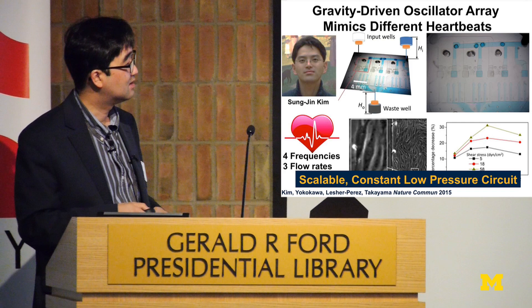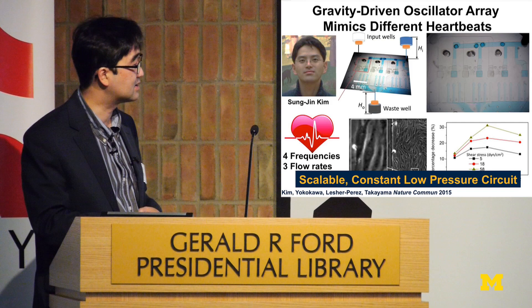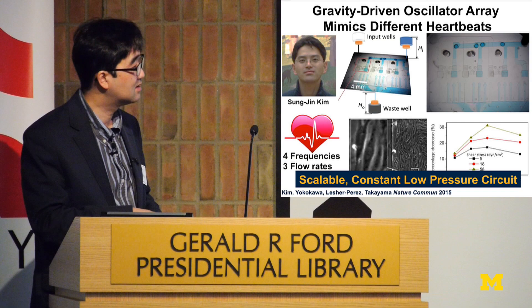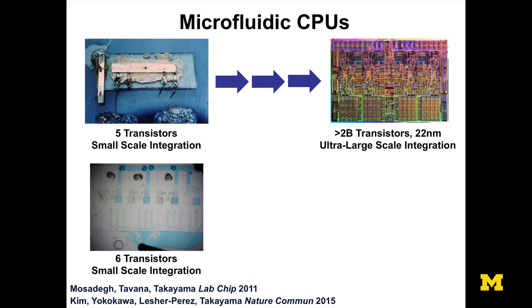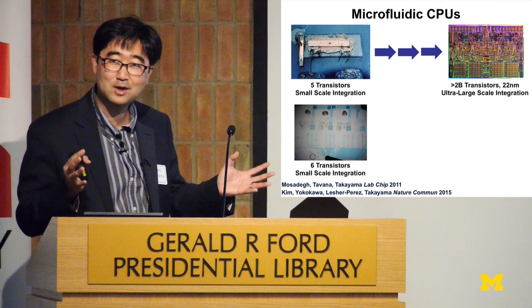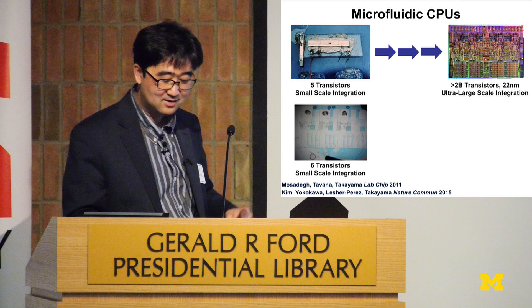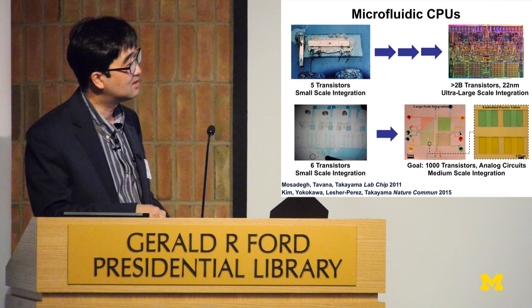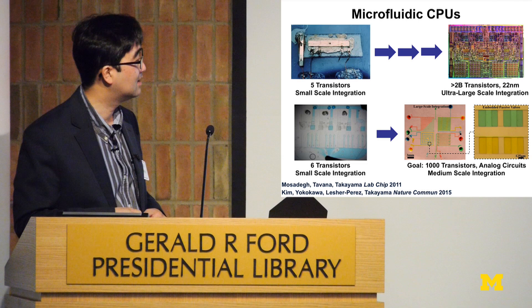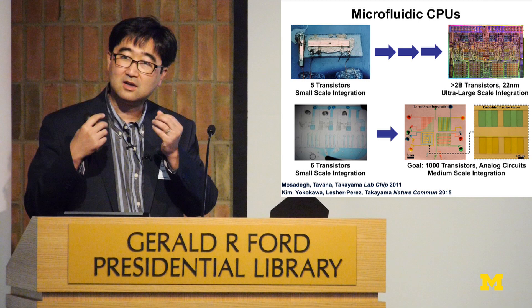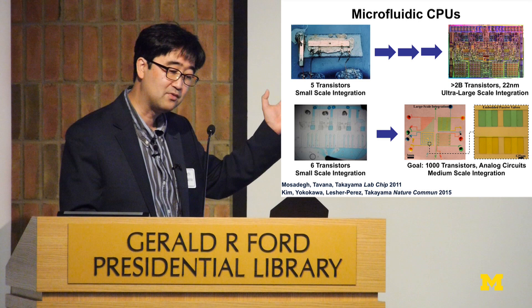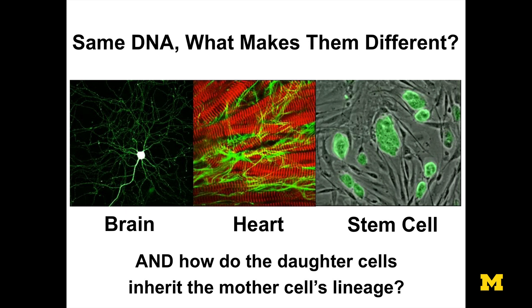Technologically, this was very important because now we have a scalable circuit architecture that runs on a constant low-pressure driving force. We believe we can now start to have better analogy with electronic circuits. Electronic circuits went through many generations to reach 2 billion transistors and 22-nanometer circuits. We don't aspire to that level of integration, but we have started to combine hundreds of elements together in a medium-scale integration, and this is the type of thing we hope can contribute to microfluidic human-on-a-chip and organ-on-a-chip systems where the thinking and fluidic control are integrated into fluidics as well.